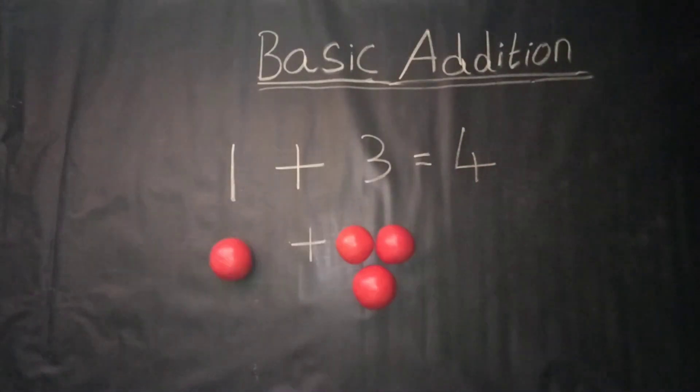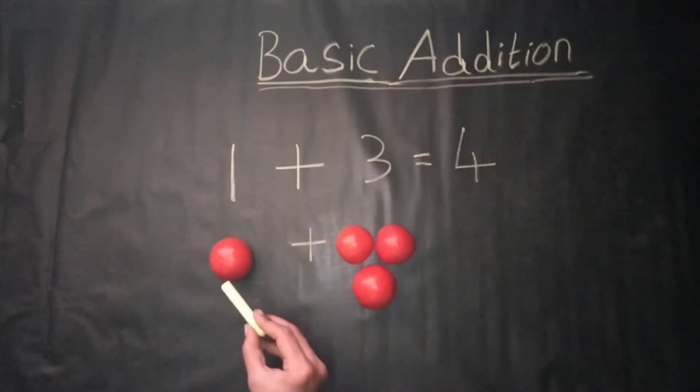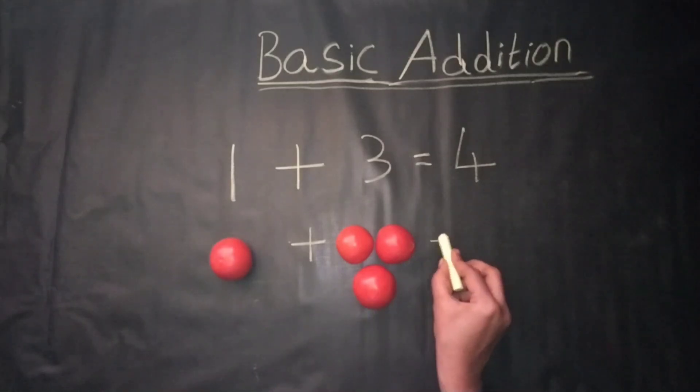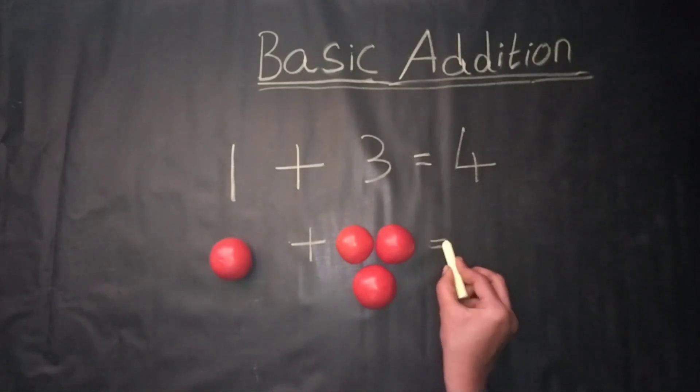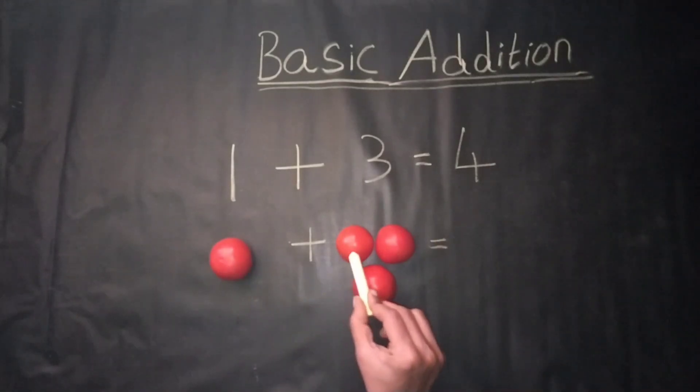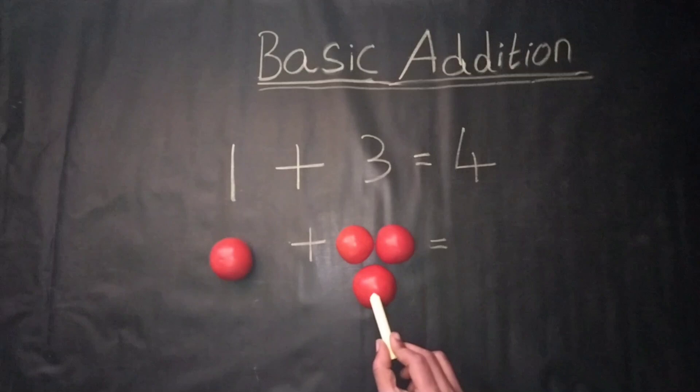Counting by objects, 1 plus 3 is equal to — count together: 1, 2, 3, 4.